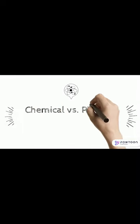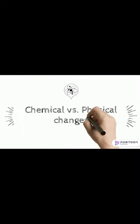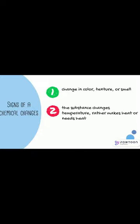Now that we've made everything, let's talk about the differences between chemical and physical changes. First, we're going to start with chemical. Some signs of chemical changes are that there's a change in color, texture, or smell. The substance changes temperature — either makes heat or requires heat. Or the new substance cannot go back to the original.